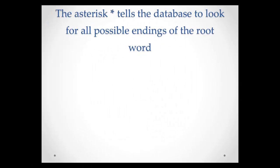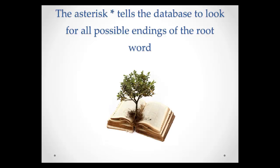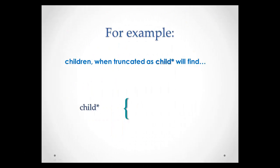Most databases use the asterisk to indicate truncation. Placing the asterisk at the end of the root word will allow you to search for all possible endings for the word. For example, children when truncated as child asterisk will find child, children, childhood, and childs.